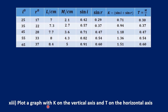We are going to plot a graph with k on the vertical axis and t on the horizontal axis. K has no units because sin i has no units and sin r has no units, so when we add the two there are no units for them. C has no units because m is in centimeters and L is also in centimeters, so when we divide they cancel out.